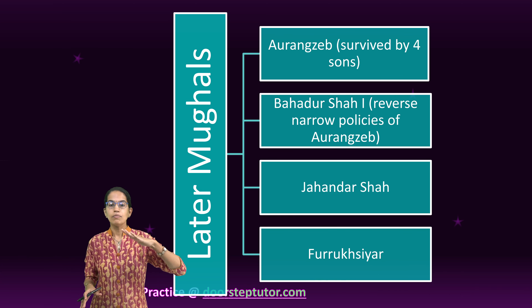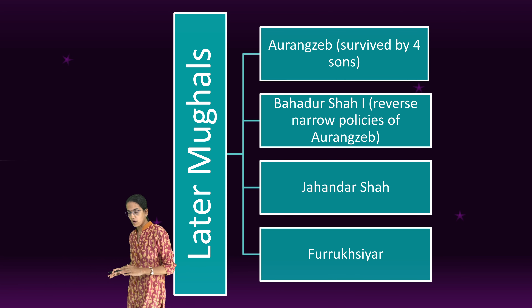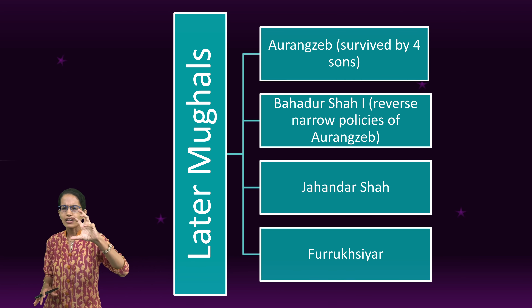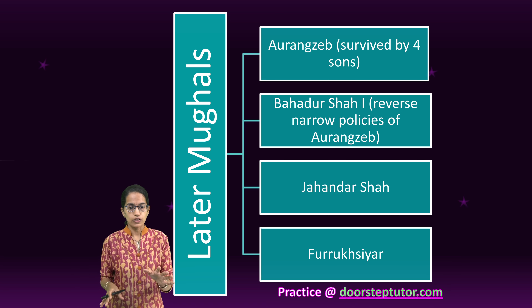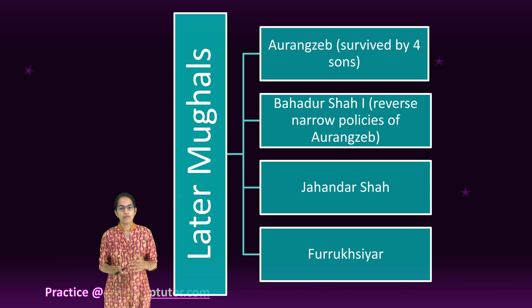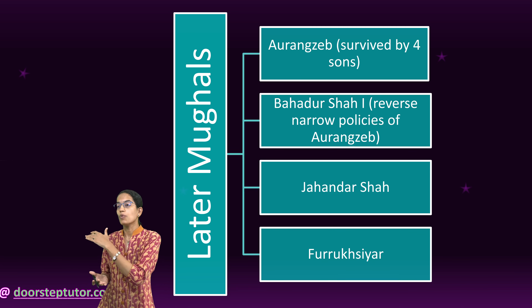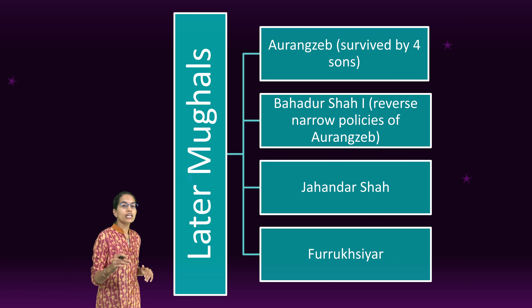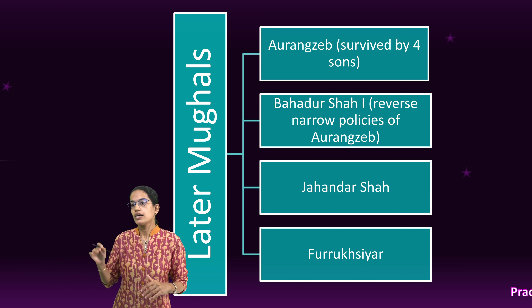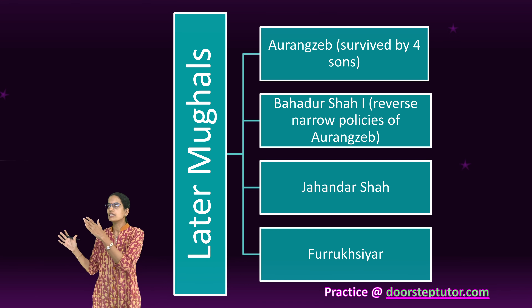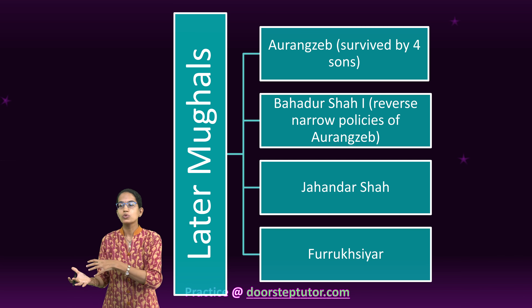However, Bahadur Shah I was not conversant with the policies laid down by Aurangzeb. He was against the narrow, defined policies of Aurangzeb and started to have his own ideology. Later on, it was Jahandir Shah, then Farukh Siyar who came to power. Among these was Mohammed Shah, and during his period came the invasion of Nadir Shah in India in 1739, who looted India.